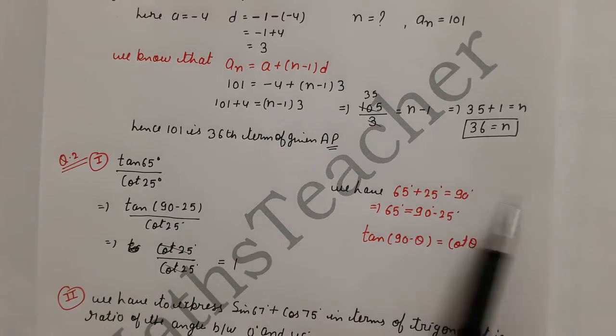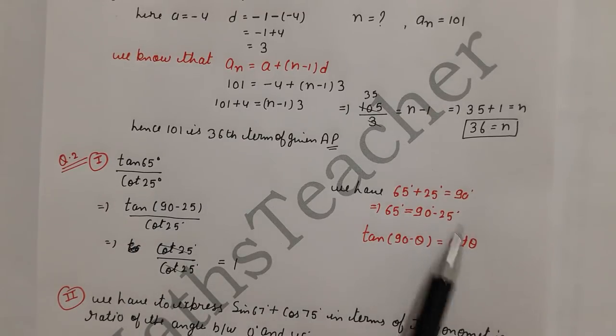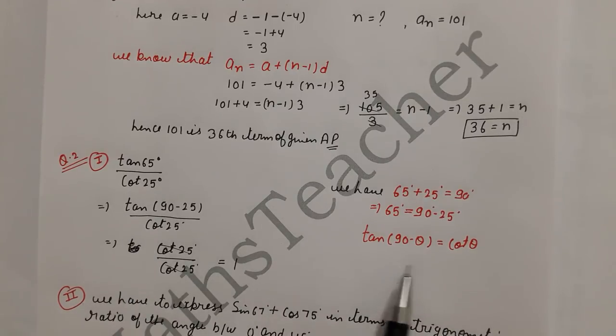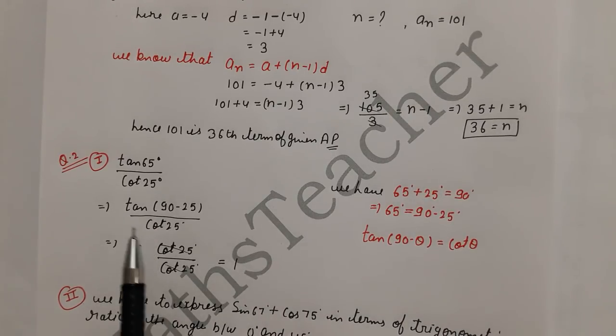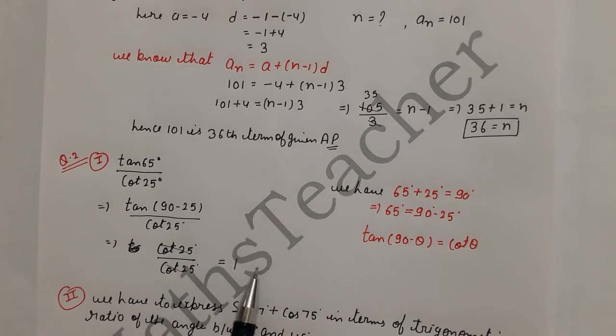I have to change this. I am changing 65 plus 25, we know equals 90. So 65 we have to transfer to 90 minus 25, which gives cot(25). Then cot(25) is canceled.